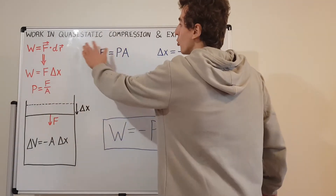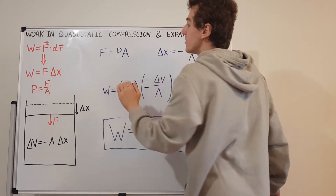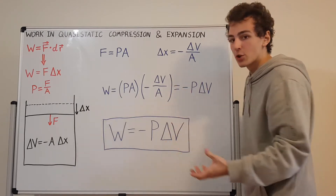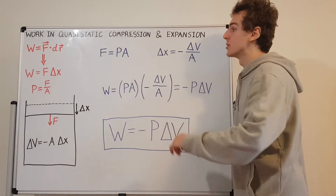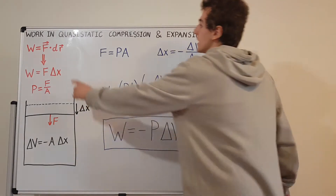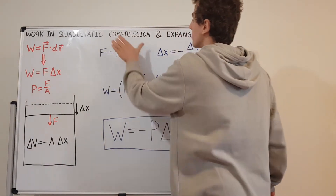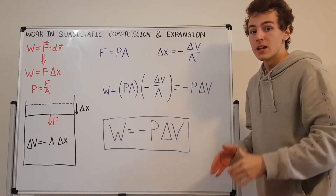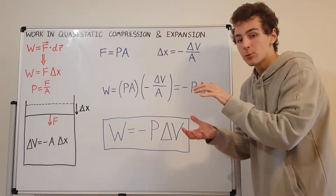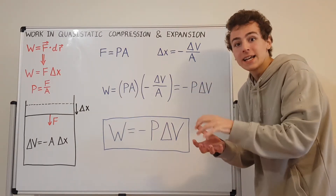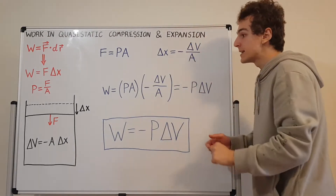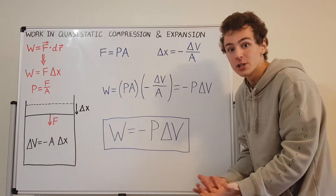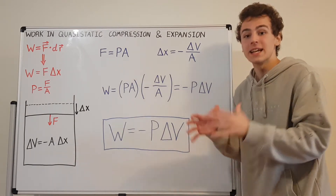Quasi-static means it's almost static — almost as if nothing's changing — but it's changing slowly so that all the relevant macroscopic quantities are defined with no abrupt jumps. Compression and expansion are fairly intuitive ideas. If you compress a gas, you're decreasing its volume and adding energy to it. If a gas expands and pushes against the surroundings, it's losing energy because it takes energy to expand, and its volume is increasing.